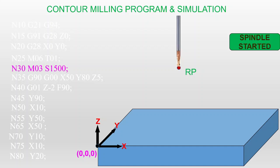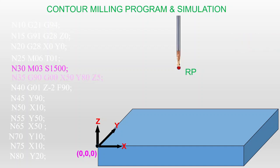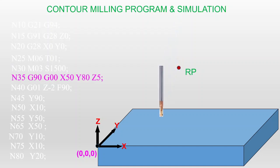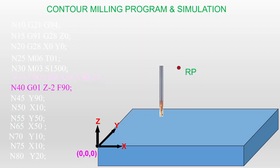Next, bring the tool from the reference point to the tool entry point. You can use the code: G90 G00 X50 Y80 Z5. The tool entry point is at point 1 with coordinates X = 50, Y = 80, positioned 5 mm above the workpiece. Now bring the tool to the workpiece at a 2 mm depth — the code is N40 G01 Z-2 F9. The tool goes inside the workpiece and contour milling begins.